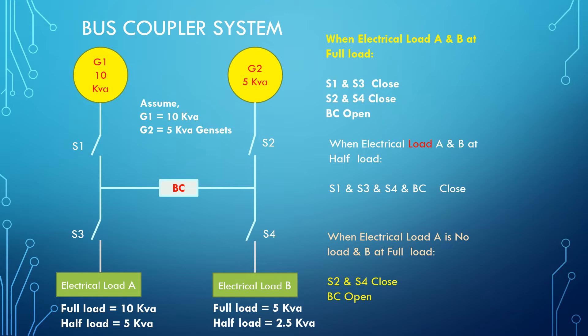When S2 and S4 close, Generator 2 is directly connected to electrical load B. Generator 2 runs at 5 kV and supplies electrical load B. Electrical load A is also supplied — power has been added and load is shared. The left side shows 5 kV load being fed. Electrical load B is done.